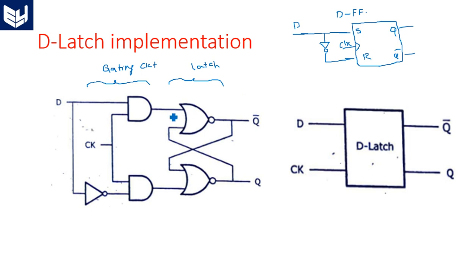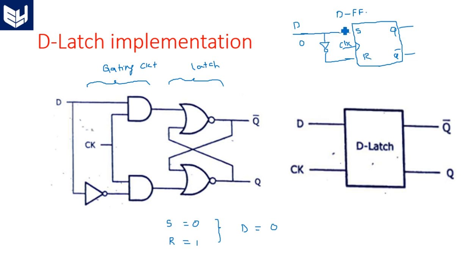In SR Latch we have four different states: 0-0, 0-1, 1-0, and 1-1. The D Latch operates particularly when SR equals 0-1 and SR equals 1-0. When S equals 0 and R equals 1, the input D is equal to 0. D equal to 0 means S equals 0 and R equals 1. In this case, if it is active high, the output Q is equal to 0.